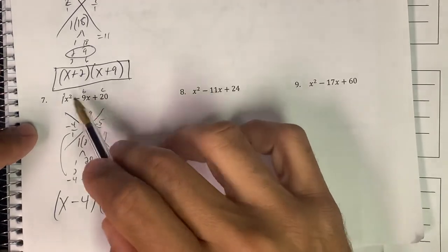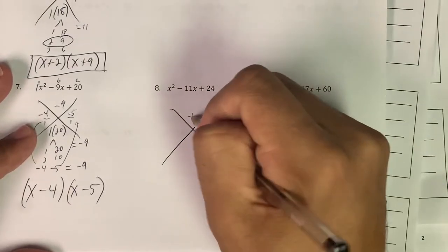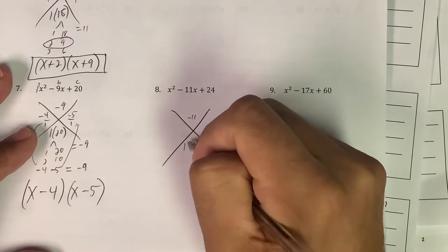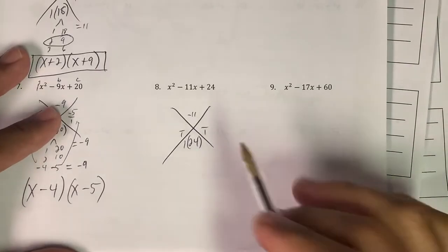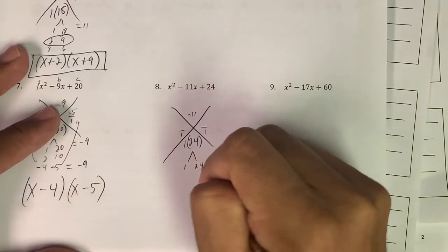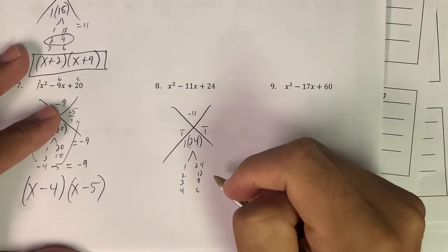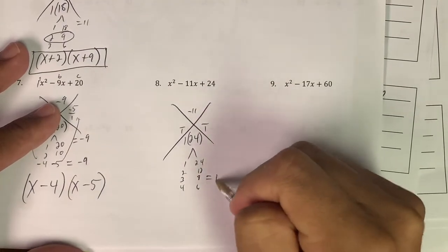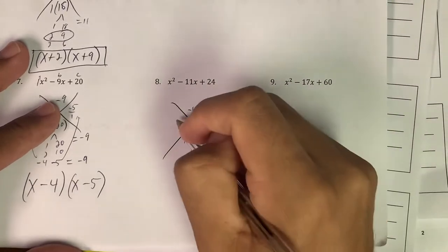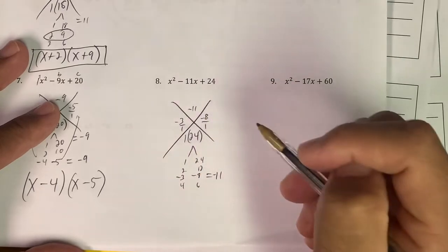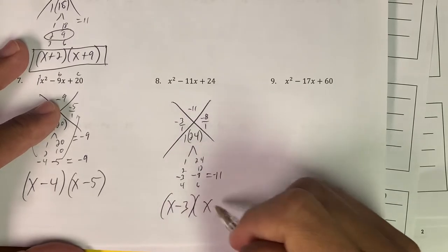I'll do another one: negative 11, 24. We got 1 times that, divide by 1. Again, I'm writing that because tomorrow it will change. Right now it's really easy. 1 and 24, 2 and 12, 3 and 8, 4 and 6. Which one equals 11? Well, that equals 11, but we want negative 11, so I need both of those to be negative. So again, when I put this up here, negative 8, negative 3, that's x minus 3, x minus 8.